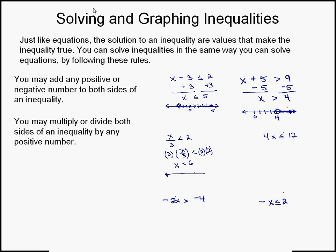Again, we're going to make our number line and markings. That's going to be an open circle around 6, and it's going to be all the values to the left — so darken the arrow on the number line. Now for the inequality 4x less than or equal to 12: 4 is multiplying x, so we perform the opposite operation, division. Dividing both sides by 4, we're left with x is less than or equal to 3. It's a darkened circle around 3, then darken the arrow going to the left of 3.